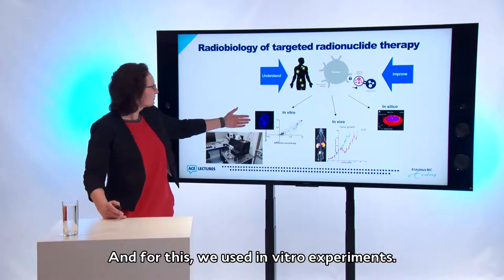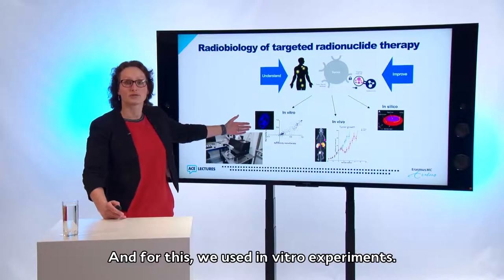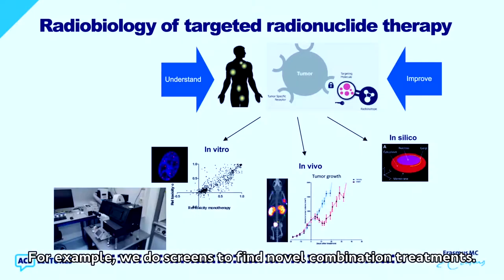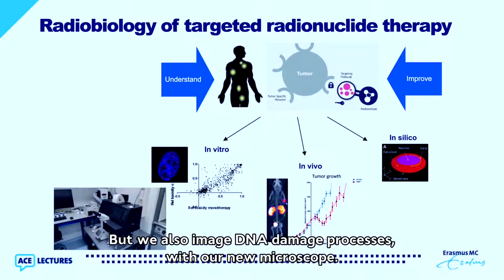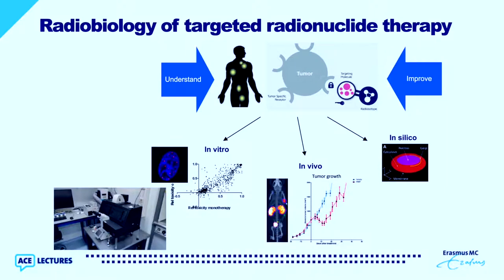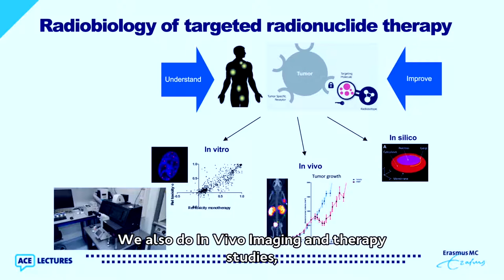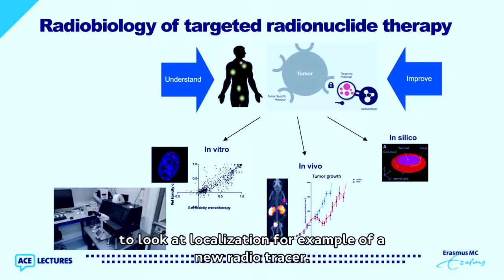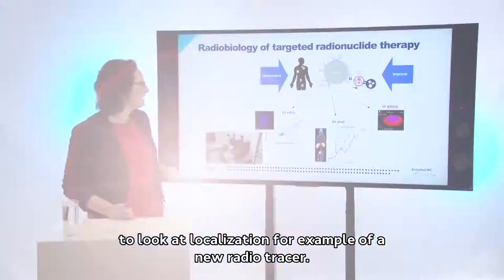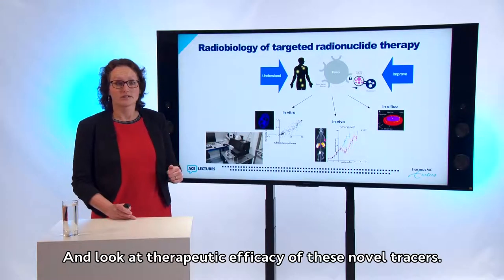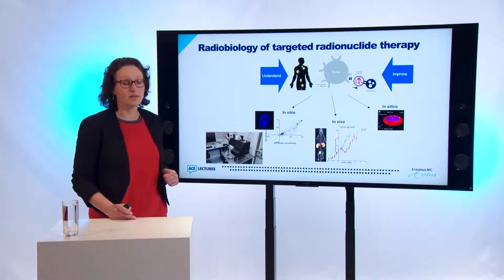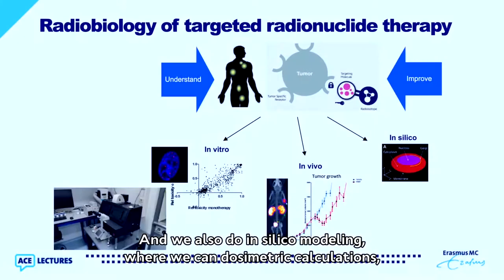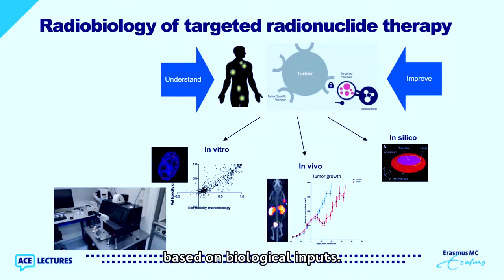For this, we use in vitro experiments — for example, screens to find novel combination treatments, and we image DNA damage processes with our new microscope. We also do in vivo imaging and therapy studies to look at localization of new radiotracers and evaluate therapeutic efficacies. Additionally, we do in-silico modeling where we perform dosimetric calculations based on biological inputs.